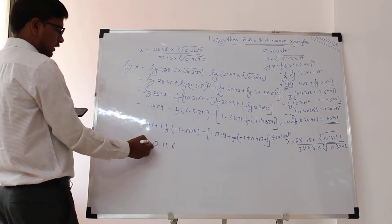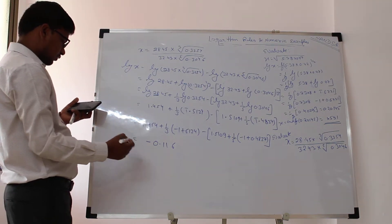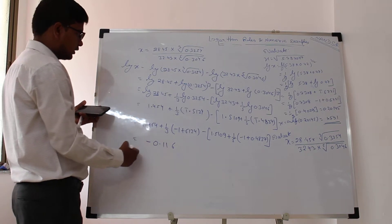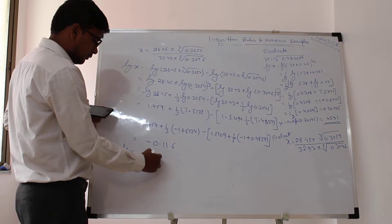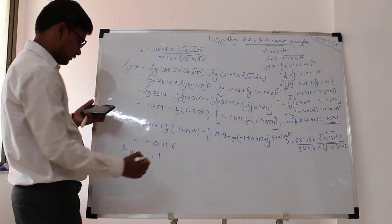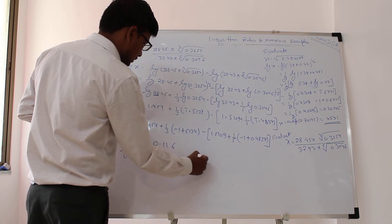So anti-log cannot be for negative numbers. So firstly, I need to make it positive. How will I make it positive? Log f equals—I will add minus 1 plus 1 minus 0.116.